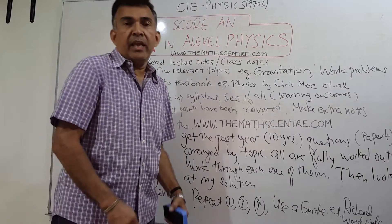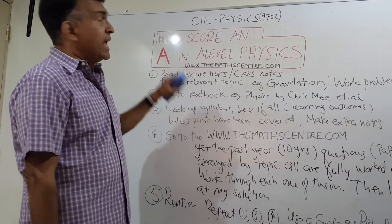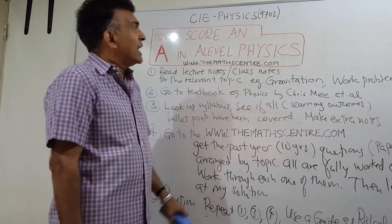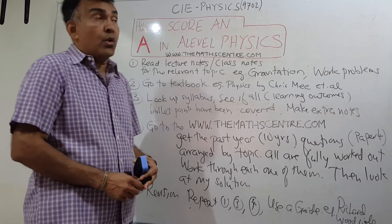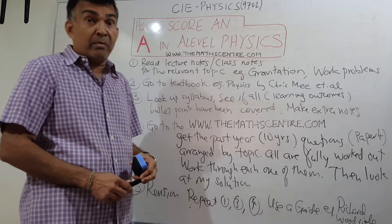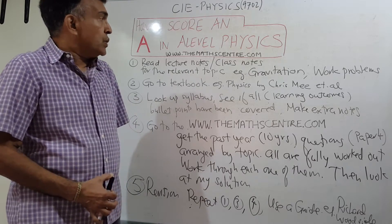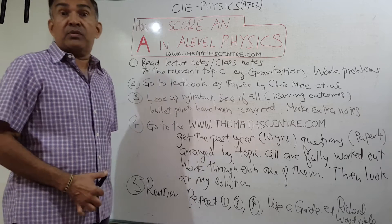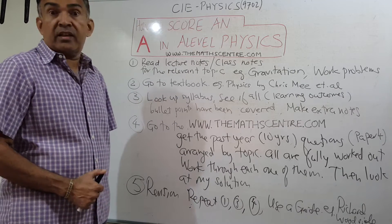Welcome to the madcenter.com. In this video we're going to talk about a very interesting topic: how to score an A in A-level physics. The emphasis will be on the CIE syllabus, which is the syllabus we have done a great deal of work in. I'm going to tell you all the main points involved in how to achieve success — that is, getting an A grade in A-level physics. If you adopt this method of studying and stick to all the points raised here, you will attain success.